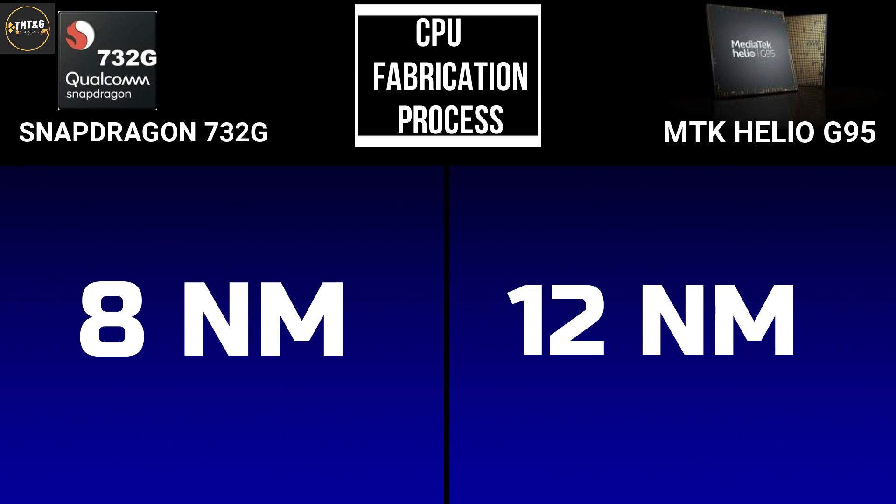The Snapdragon 732G is a little better in CPU fabrication process, which results in lower heat issues and better energy efficiency compared to the Mediatek Helio G95.